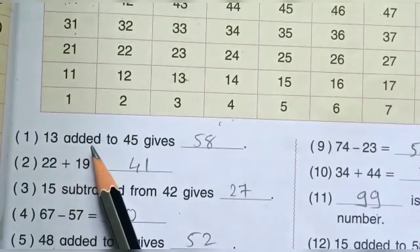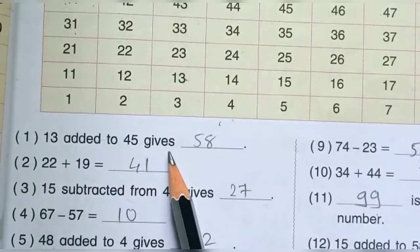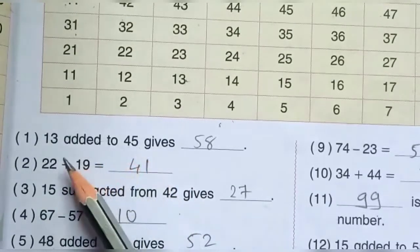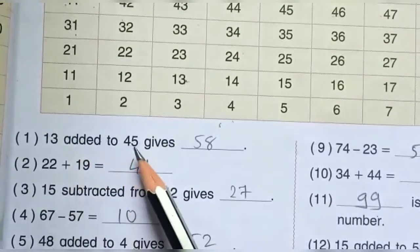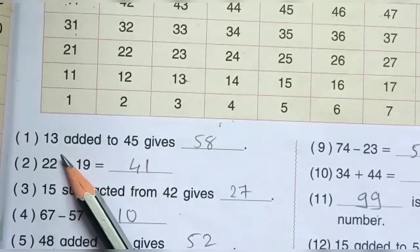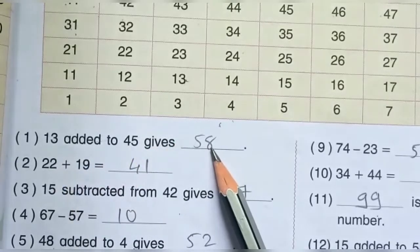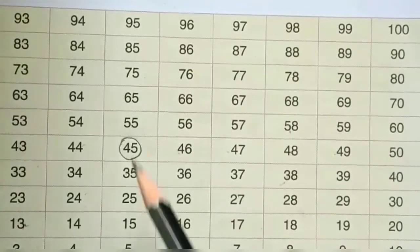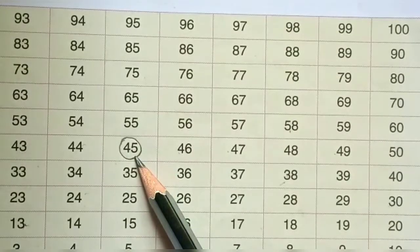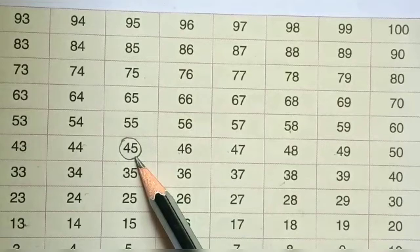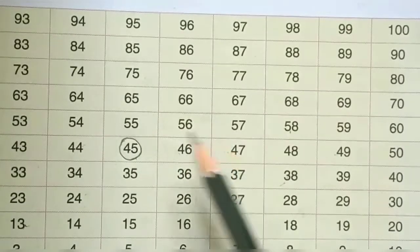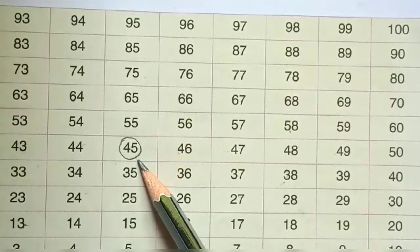First number: 13 added to 45 gives. 45 plus 13 is equal to 58. हम tables में count करेंगे 45. तो 45 पे circle करेंगे और 13 count करना है. हम पीछे के number नहीं, आगे के number count करेंगे. First of all 45 number circle, after 13 count.